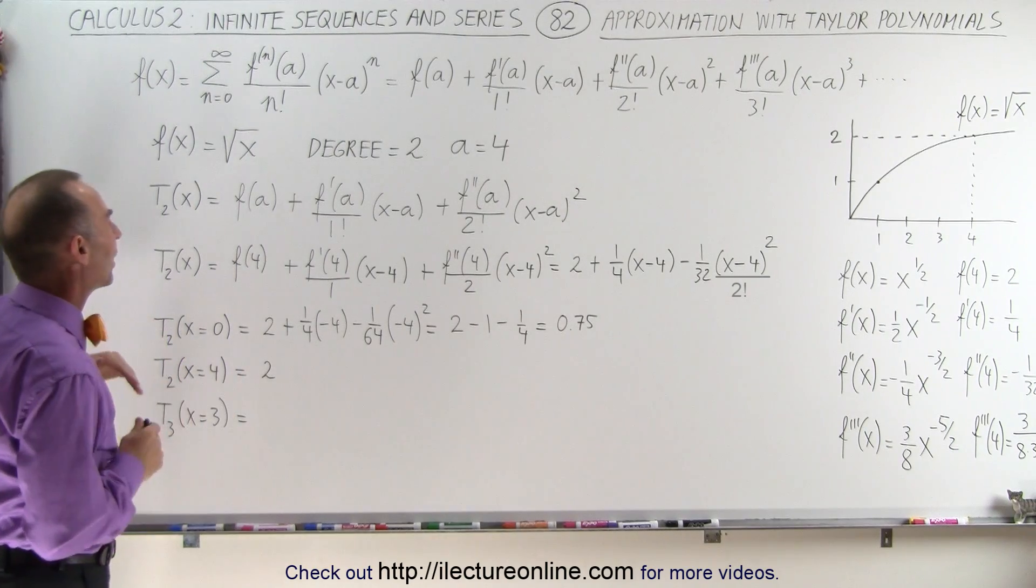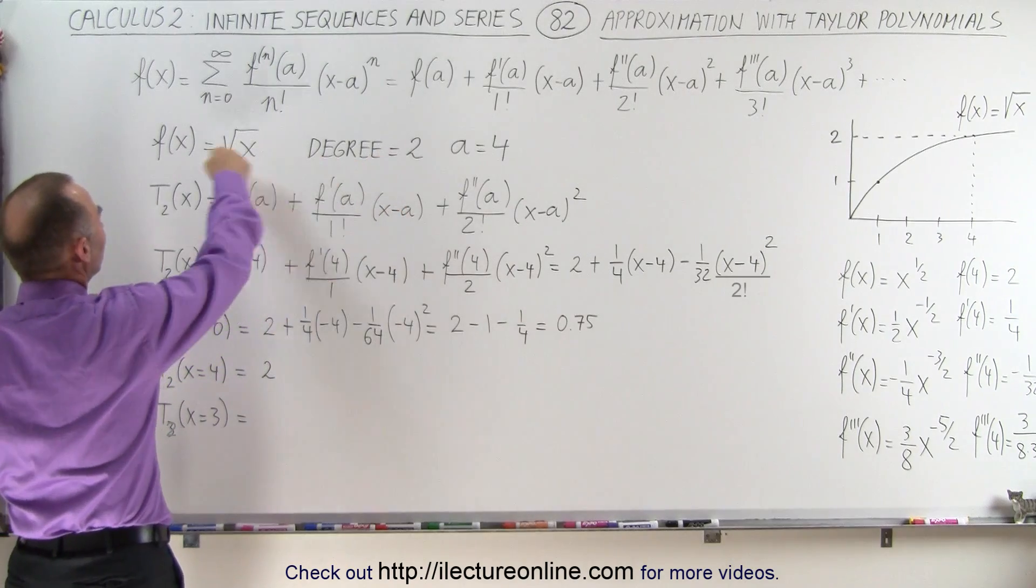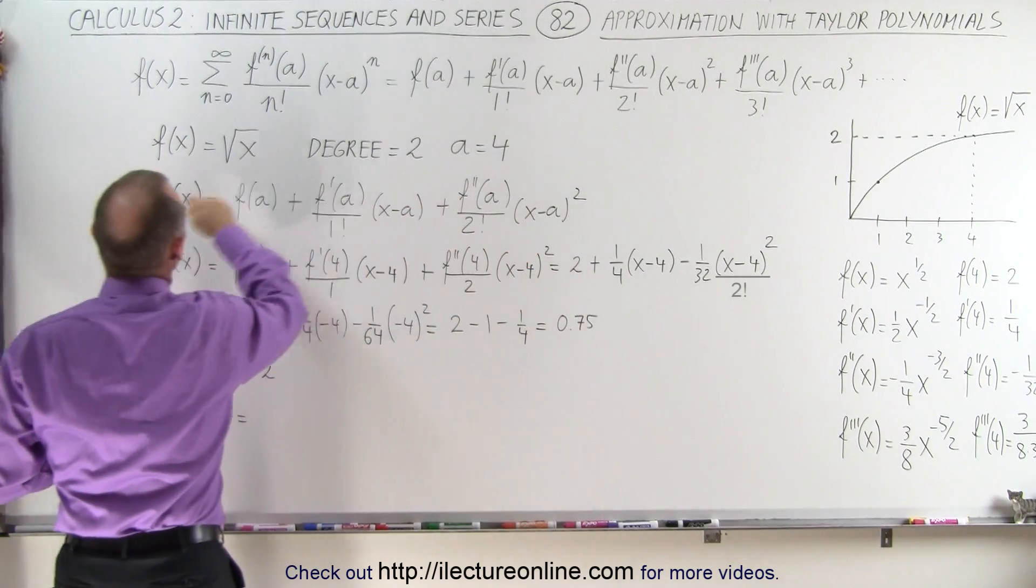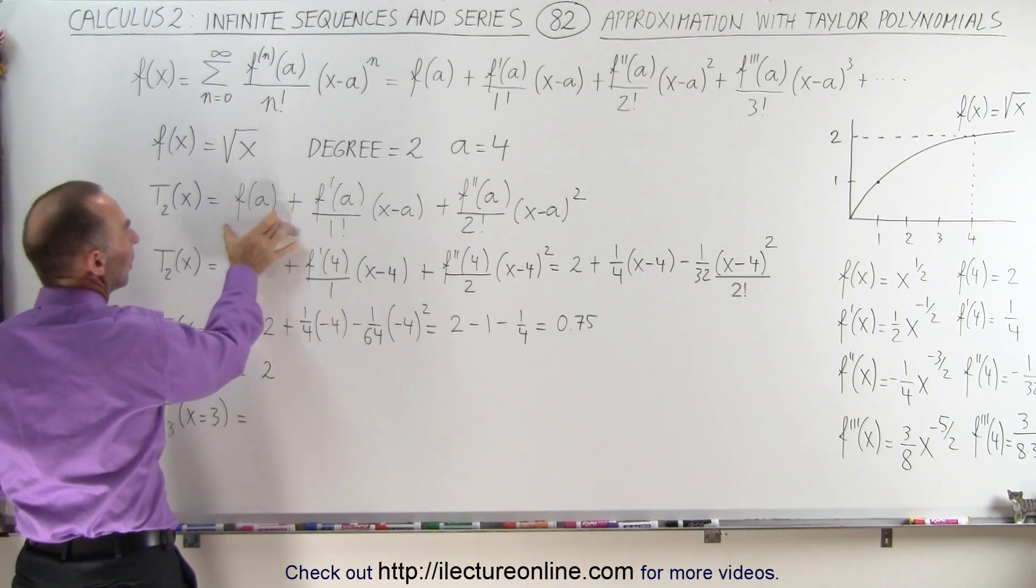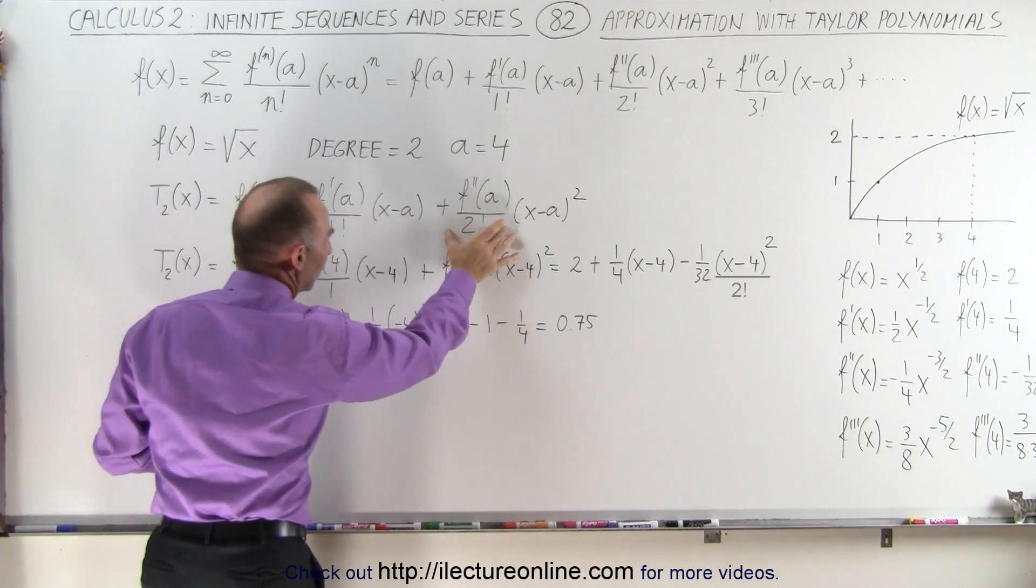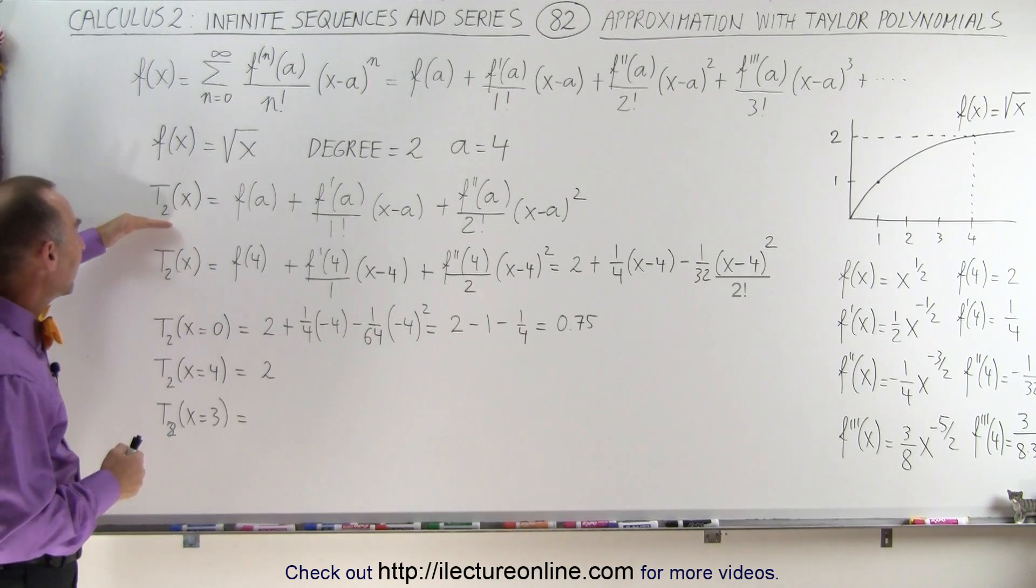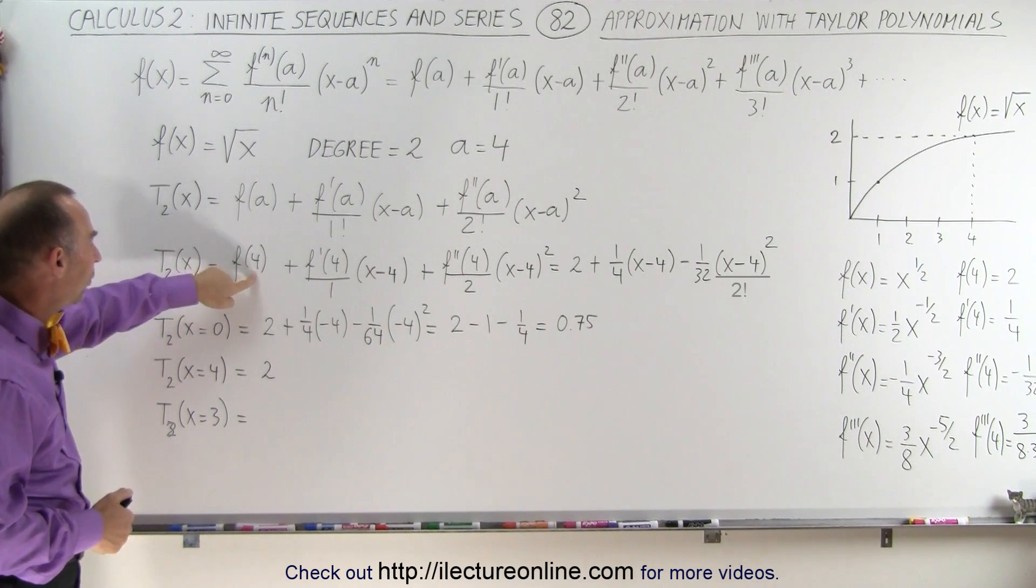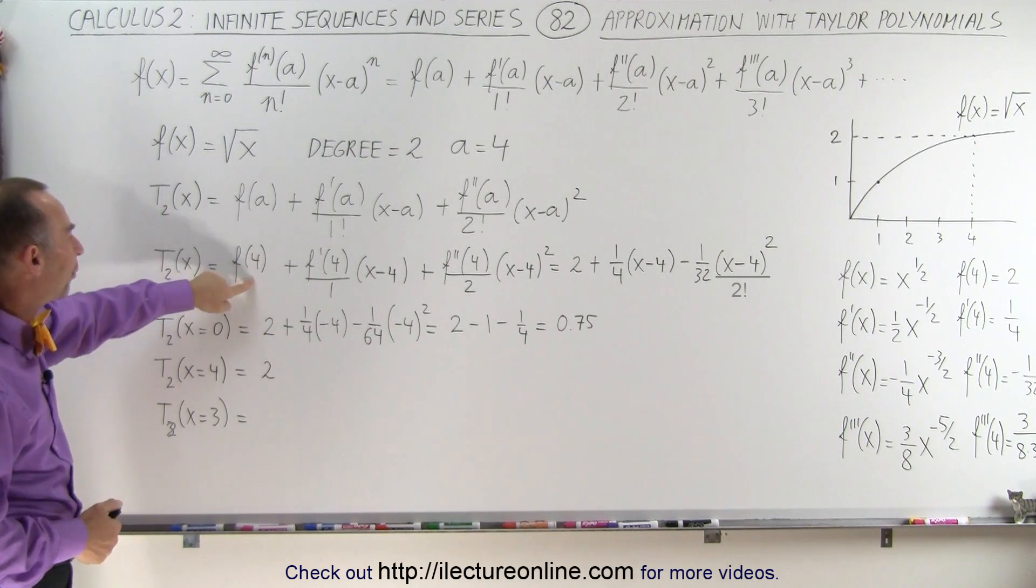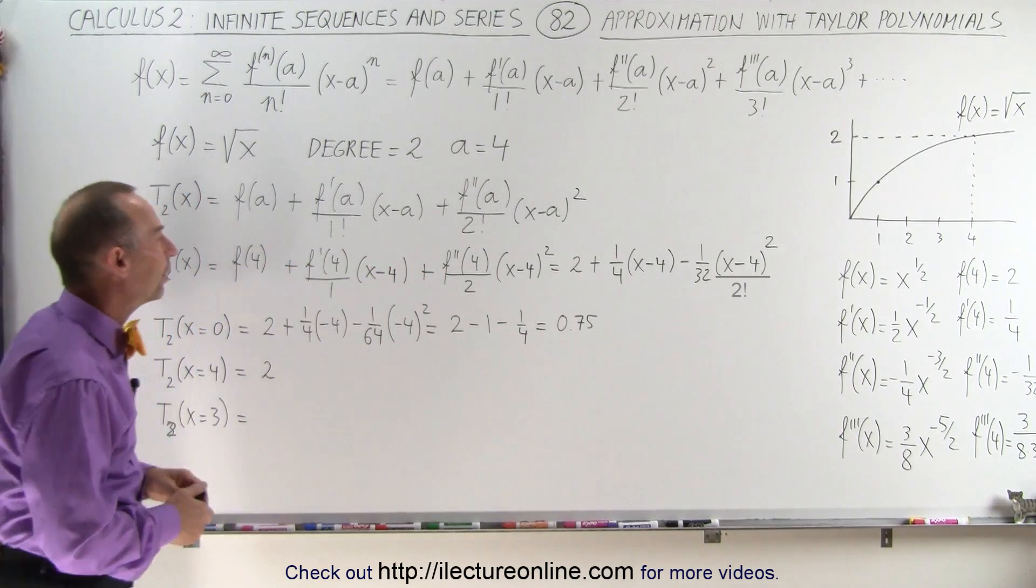Now we'll show you why that works. So here we have the Taylor series, or Taylor polynomial series, to degree 2. So we write T sub 2, so we have the first term, f prime term, and f double prime term. Now, the Taylor series to degree 2 can now be written in terms of a being equal to 4. So we replace every a by 4, so we get f(4), f prime of 4, f double prime of 4.